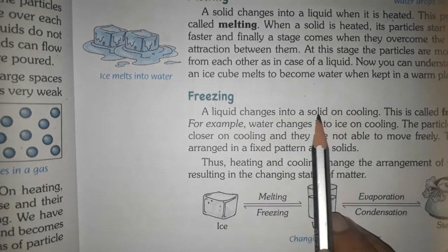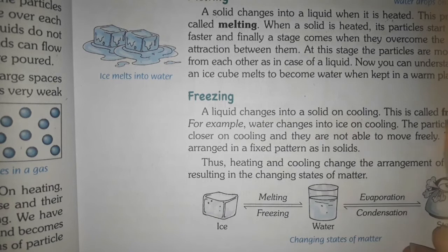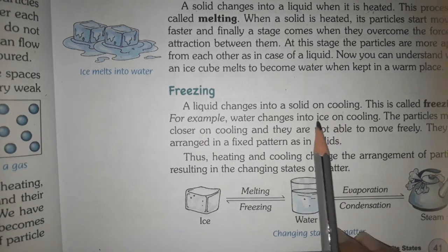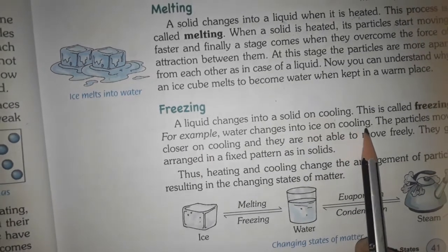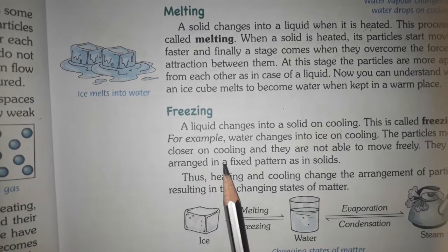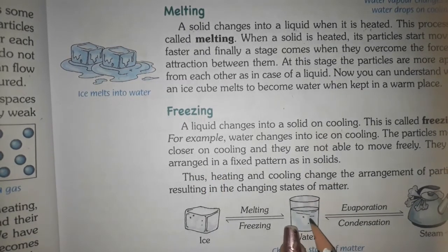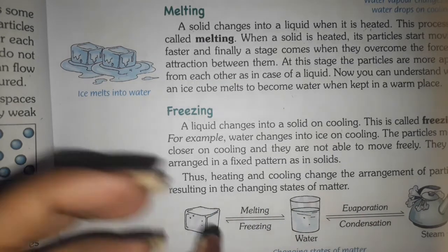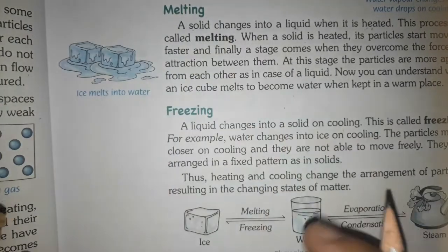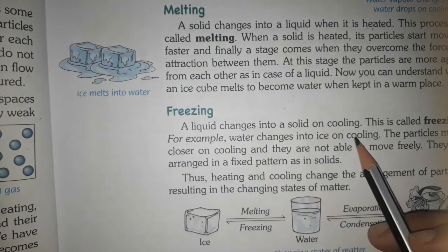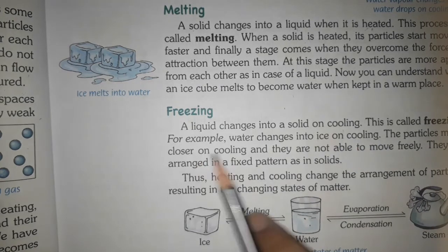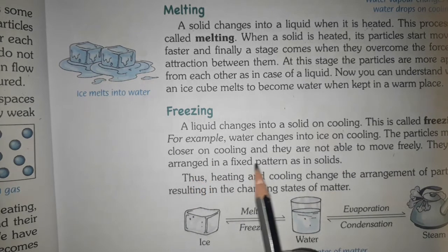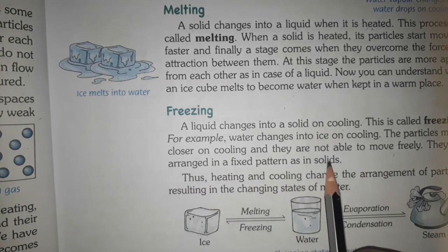इसी तरह liquid solid में convert होता है on cooling — इसे Freezing कहते हैं। For example, water changes into ice on cooling. Particles आपस में पास-पास आ जाते हैं — water के molecules थोड़े दूर थे, freeze करने से ठंडे हो गए, पास-पास आए और solid यानी ice में convert हो गए। They are not able to move freely, and they get arranged in a fixed pattern, जैसे solids में होता है।